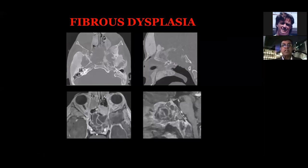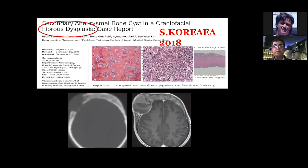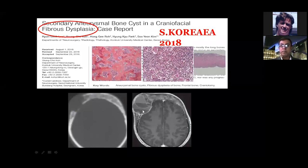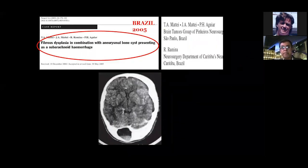Such lesions include fibrous dysplasia. You start with fibrous dysplasia and then develop aneurysmal bone cysts inside it. Papers from South Korea (2018), Brazil, Japan, and the USA have all reported the combination of fibrous dysplasia and aneurysmal bone cysts — from frontal bone fibrous dysplasia progressing to aneurysmal bone cysts.